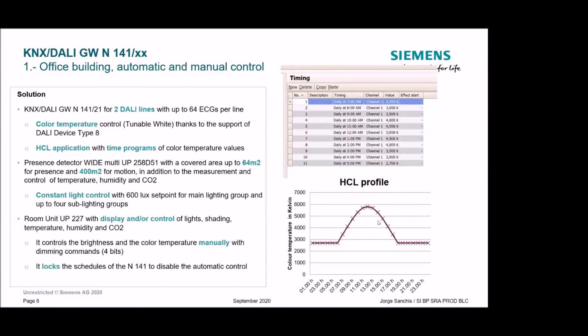In parallel, we need to control the brightness of the lights. For that we have the presence detector white, which also measures temperature, humidity, and CO2. In this case we focus on the constant light controller. It has a constant light controller with master-slave configuration, a main lighting group, and different sub-lighting groups for different light levels in the room. The KNX-DALI gateway controls the color temperature with time programs, and in parallel the presence detector performs constant lighting control for brightness, sending values to the KNX-DALI gateway — both operating automatically in parallel.